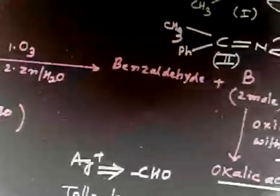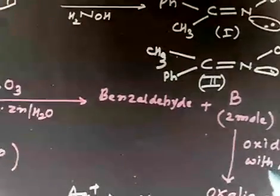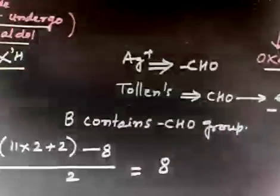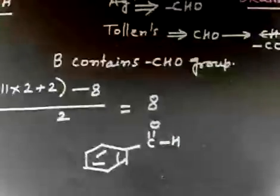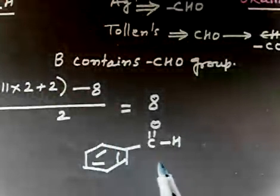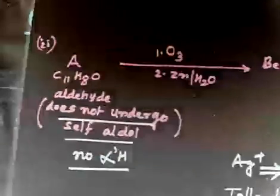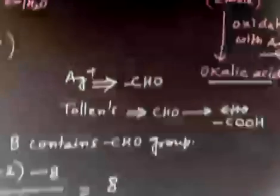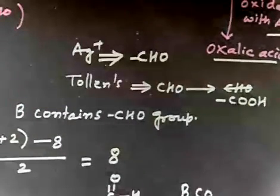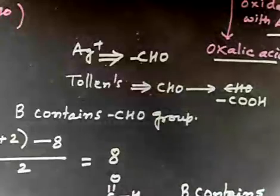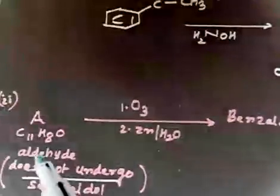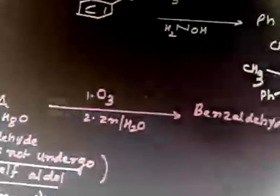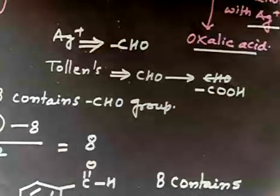Ozonolysis gives benzaldehyde — that accounts for 7 carbons (6 in benzene ring + 1 in CHO). Total carbons are 11, so remaining carbons are 4, which come from 2 moles of B. Therefore, one mole of B contains 2 carbons. We also know B contains an aldehyde group.